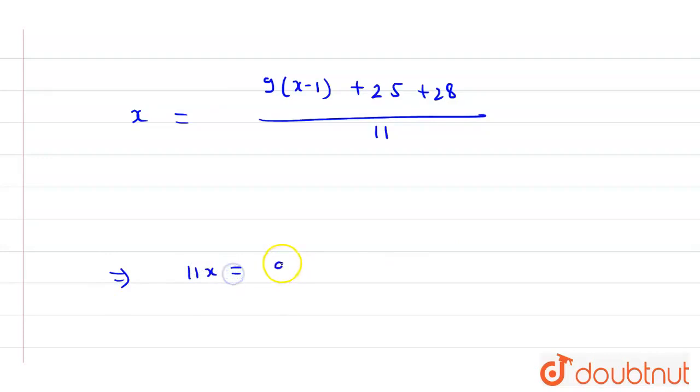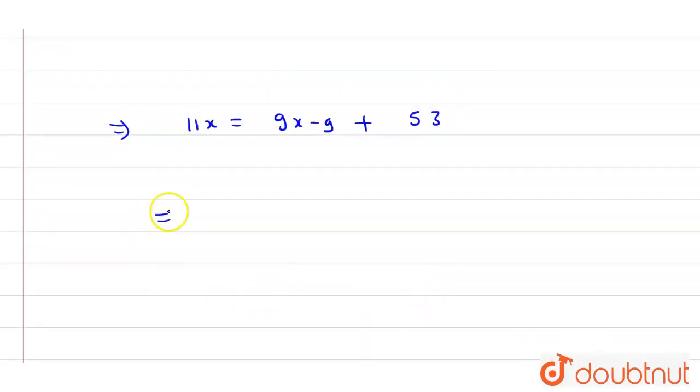Cross multiply: 11x equals 9x minus 9 plus 53, which gives 9x plus 44. So 2x equals 53 minus 9, which is 44.